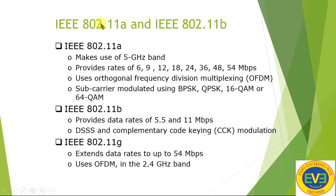IEEE 802.11a uses the 5 GHz band and provides data rates of 6, 9, 12, 18, 24, 36, 48, and 54 Mbps. It uses OFDM with sub-carriers modulated using BPSK, QPSK, 16-QAM, and 64-QAM. IEEE 802.11b provides data rates of 5.5 and 11 Mbps using DSSS and Complementary Code Keying (CCK) modulation. 802.11g extends the data rate to 54 Mbps using OFDM in the 2.4 GHz band.